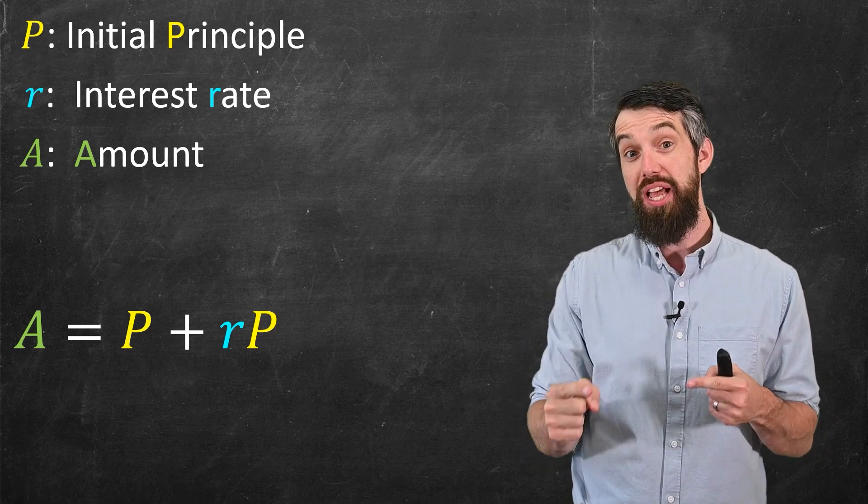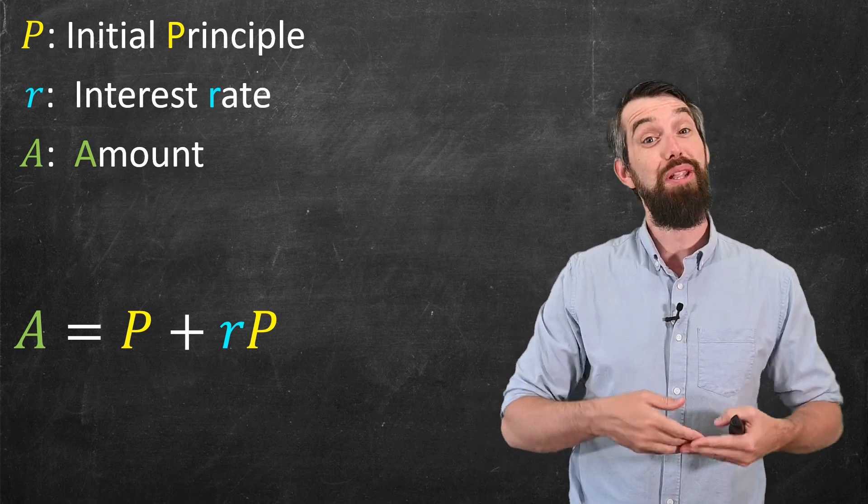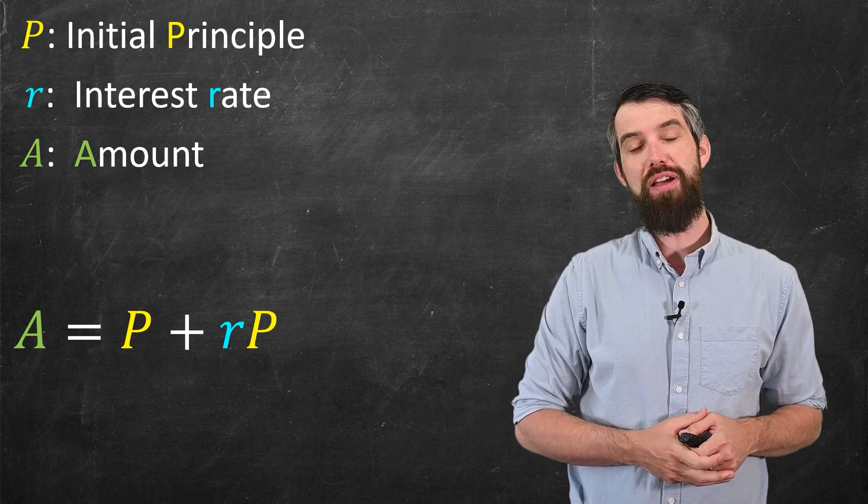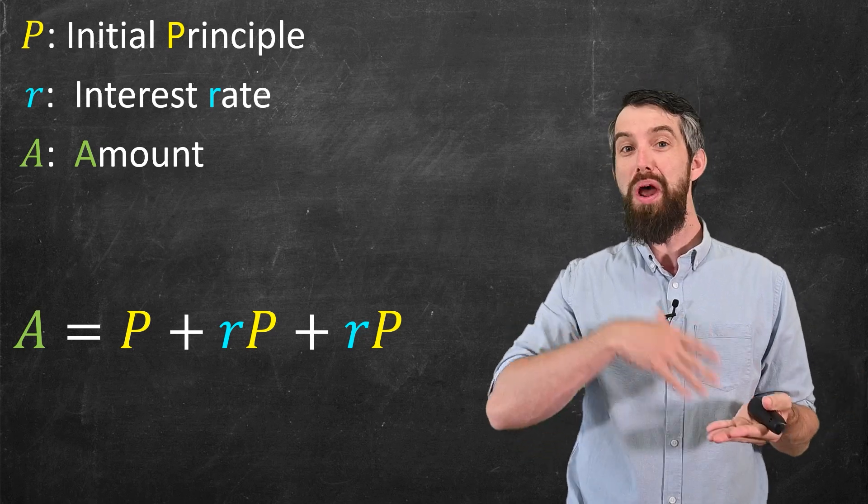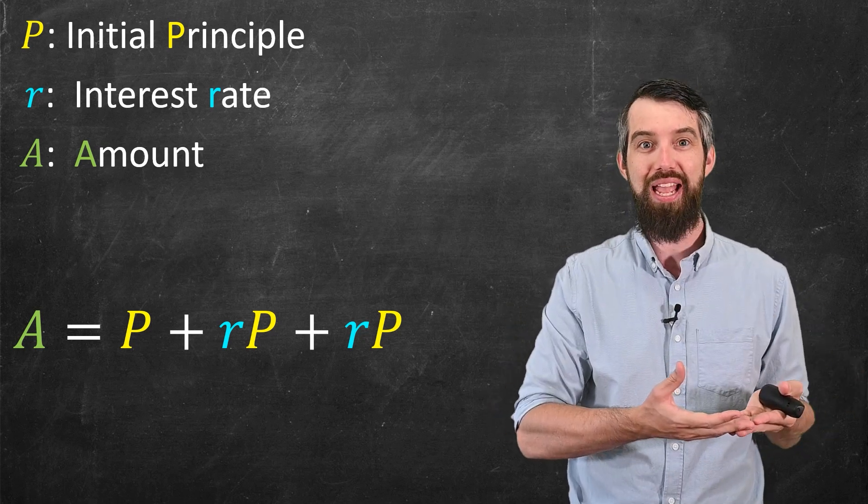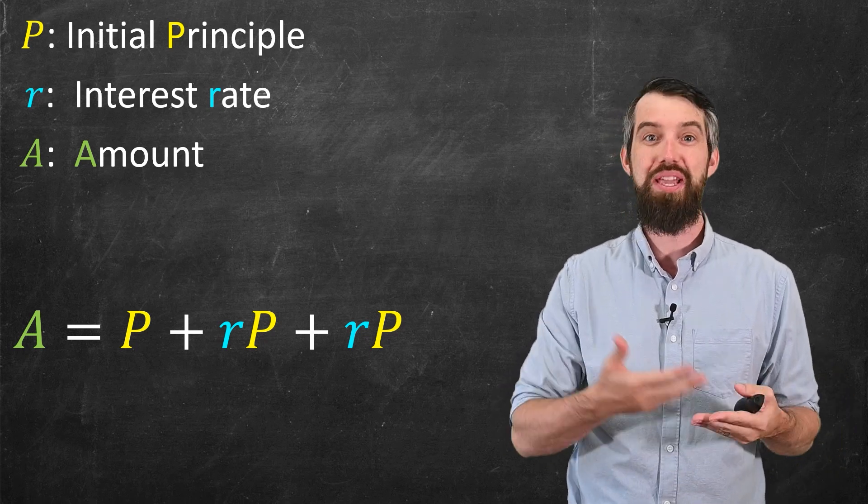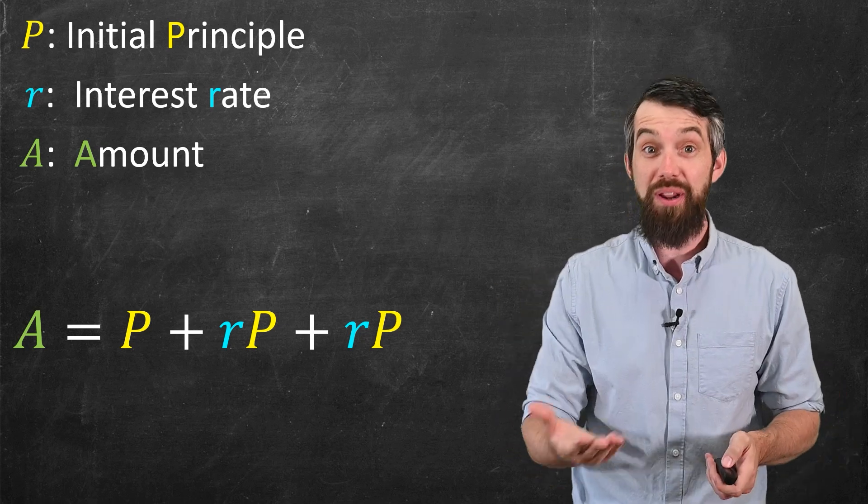But now I want to imagine that I loan the money out for multiple periods. So for example, if it's 10% per year, maybe I loan it out for two years. And if I loan it out for two years, I get my initial principal P back, I get one year of interest growth, rP back, and then a second year of interest growth, another rP.